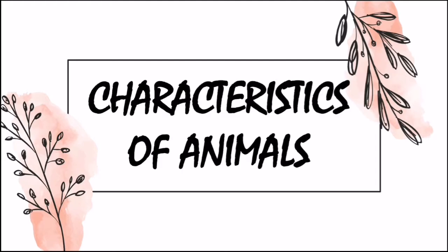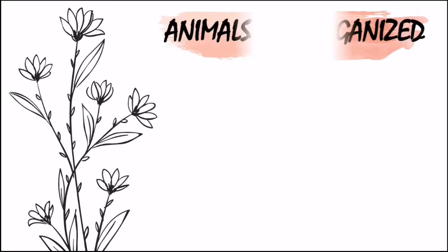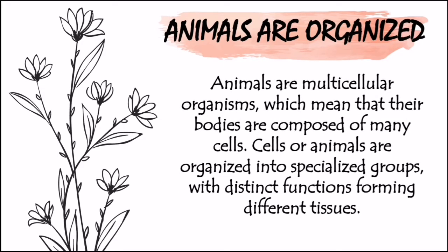The first characteristic is that animals are organized. Animal cells are organized into specialized groups with distinct functions, forming different tissues. We have cells, then tissues, then organs, organ systems, and the organism itself. Tissues may be organized to form an organ, which is a group of tissues working together to perform a complex job. The stomach, for example, is made up of nervous tissues that allow it to respond to messages from the brain, as well as muscular tissue that allows it to grind food. In most animals, different organs form organ systems.